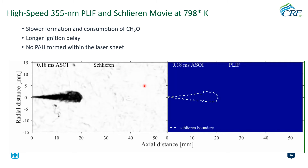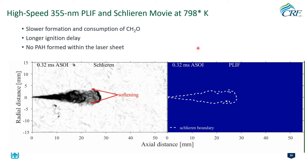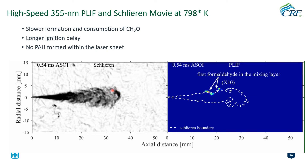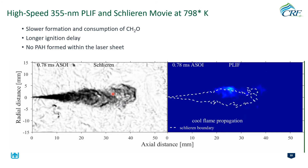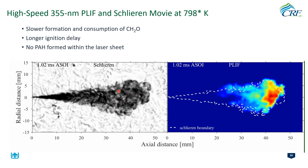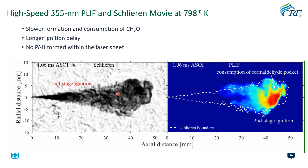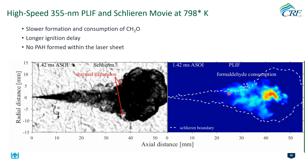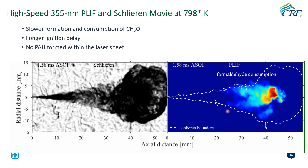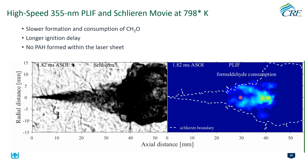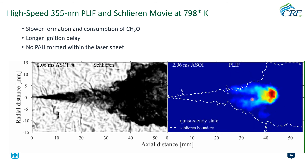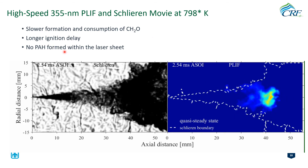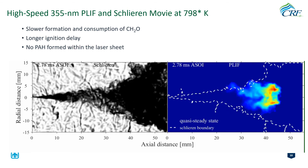In this slide we have the same image configuration as the previous slide but now for the 800 K case. The mixing state of the penetrating jet prior to ignition is significantly leaner compared to the 900 K spray-A case. It is more obvious that formaldehyde formation initiates in the mixing layer and then transports through a wide range of mixtures across the jet prior to high-temperature ignition. At this lower temperature, no PAH is formed within our laser sheet, which contrasts with the 900 K case.